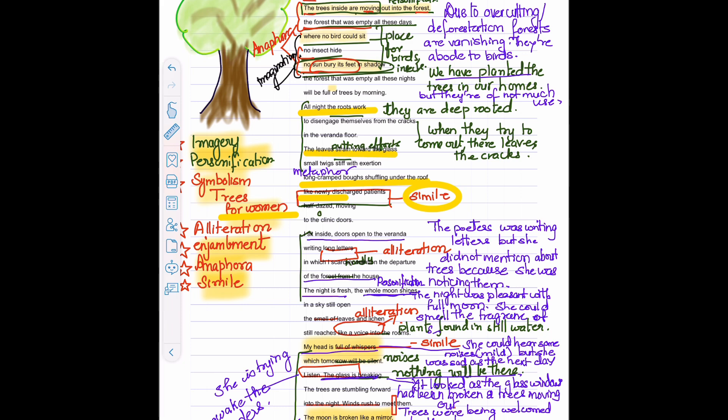The trees are stumbling means they are moving forward into the night. Winds rush to meet them. The wind is embracing them. They are welcoming them.